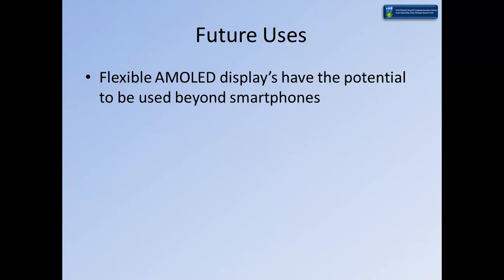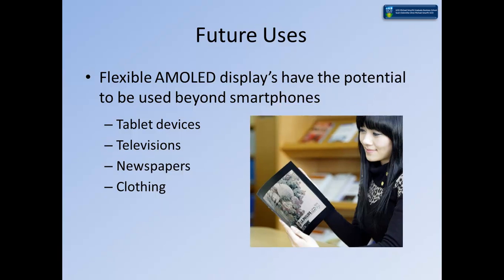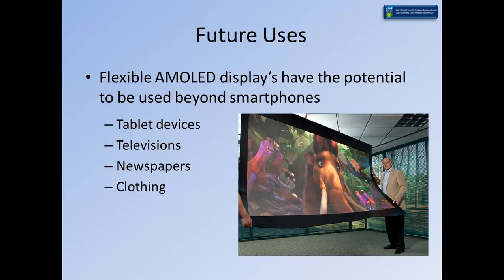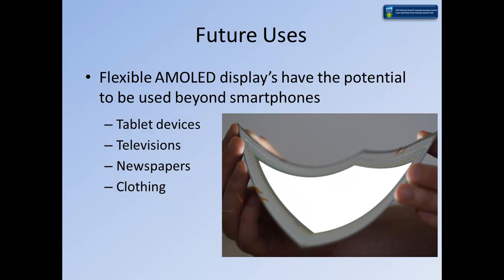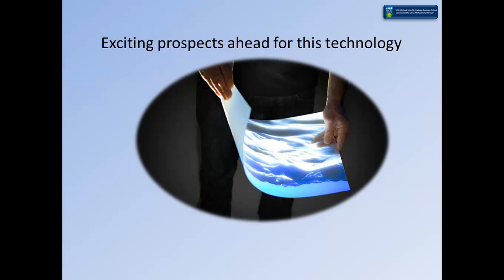We believe that there is potential for this technology to be applied elsewhere. Not only can this technology be used on smartphones, we anticipate that it will be adapted to tablet PCs and televisions. With a longer term view, we envisage that this technology could be integrated into all types of everyday material such as newspapers and clothing, because of its flexible nature and the low production costs. We believe that the advancements in this technology coupled with its current application brings about very exciting prospects for the future of visual display, and especially Samsung as the development leader in this type of technology.